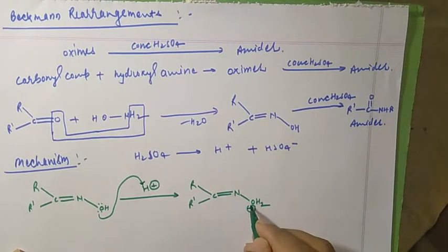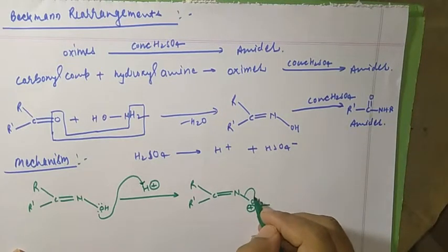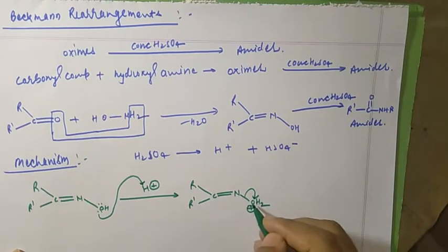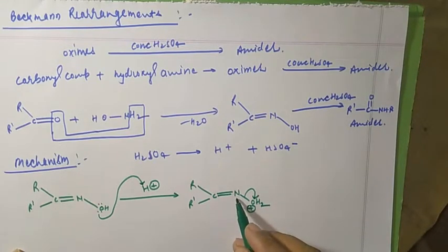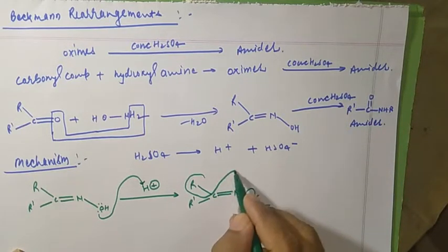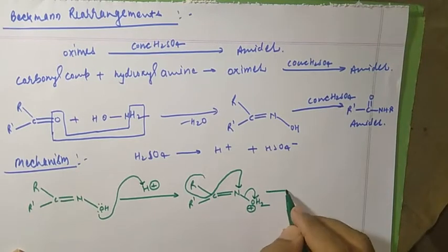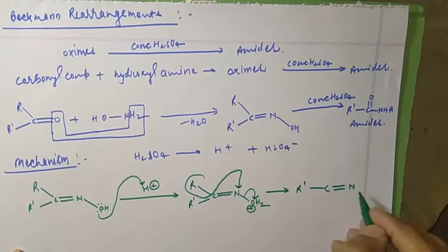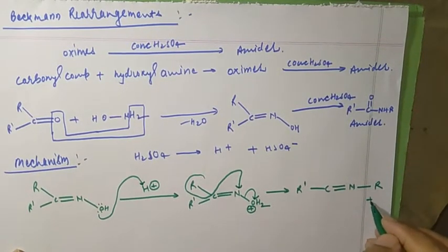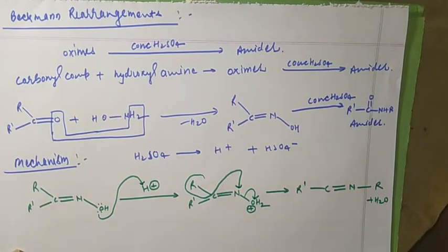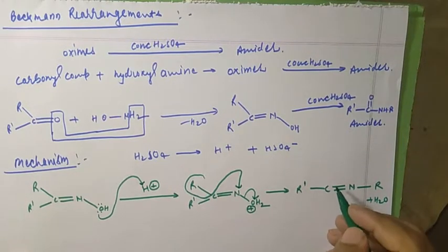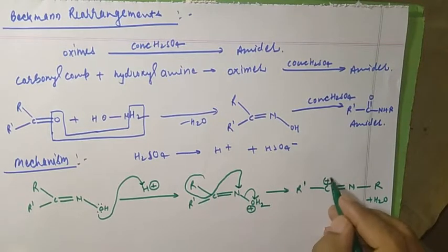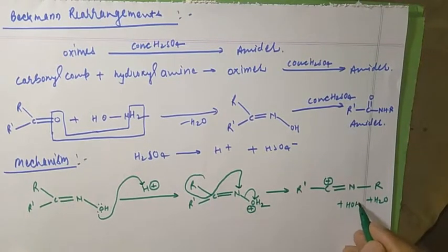After the positive charge forms on oxygen, to neutralize it, the R' bond shifts over. As a result, nitrogen acquires a positive charge. So the next intermediate is R'-C≡N+-R with H2O as a leaving group. Now we have a carbocation-like intermediate at nitrogen with valence 1, 2, 3 — positive charge is there, and I take HOH.